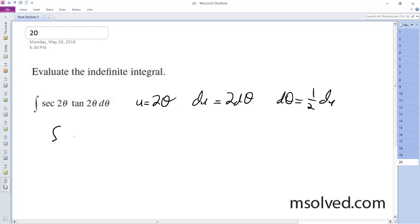So substituting in, we're going to get the integral of secant u tangent u times 1/2 du, and ultimately we get 1/2 secant u plus c.